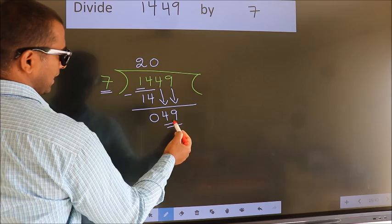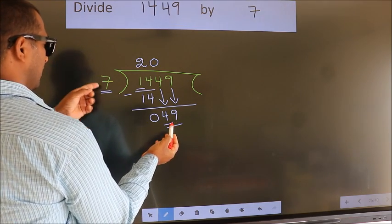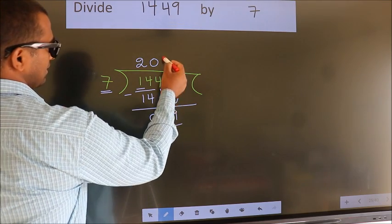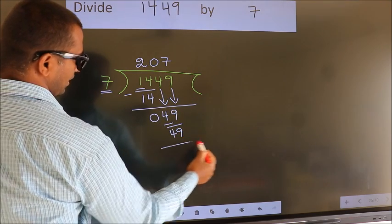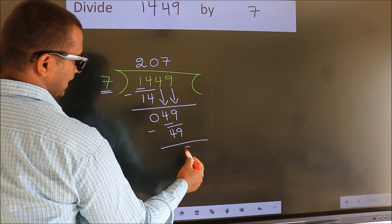So 49. When do we get 49? In the 7 table. 7 sevens, 49. Now we subtract. We get 0.